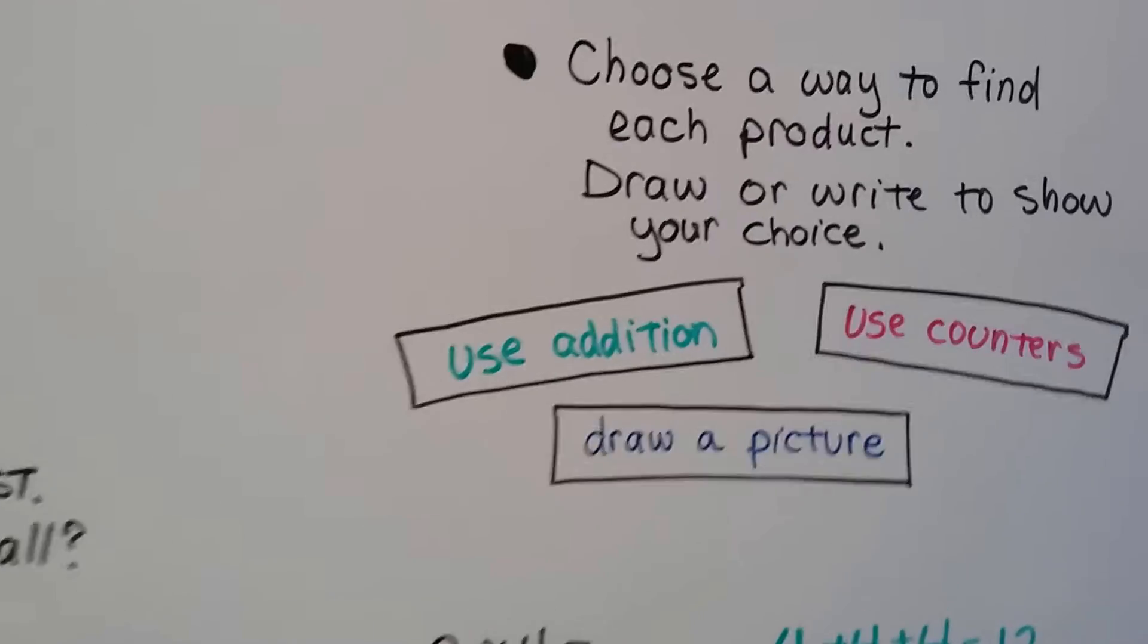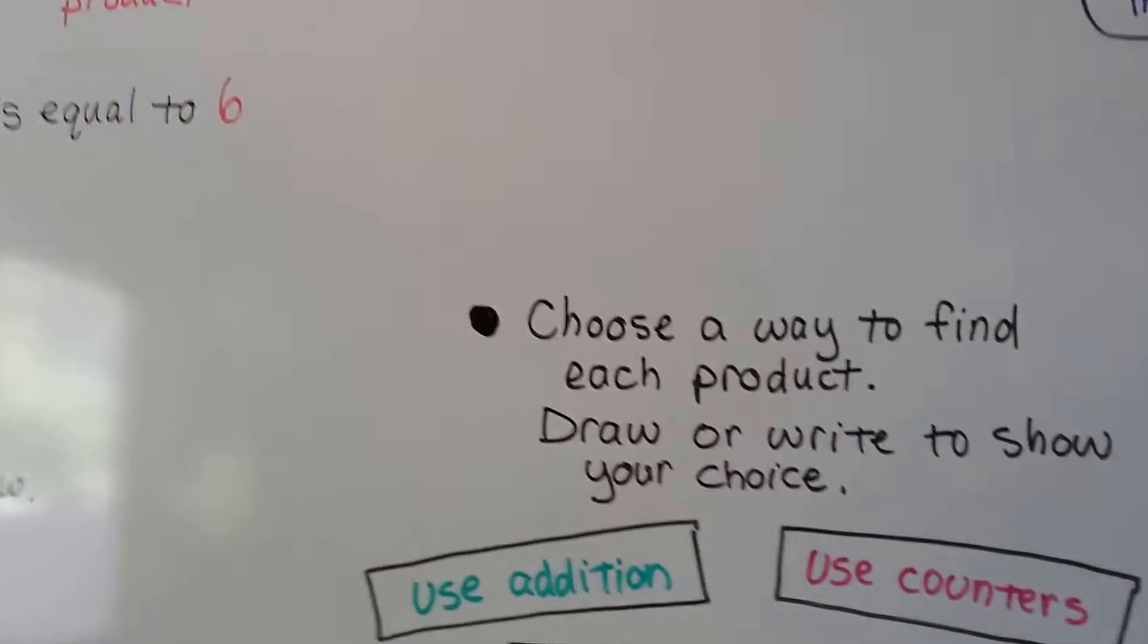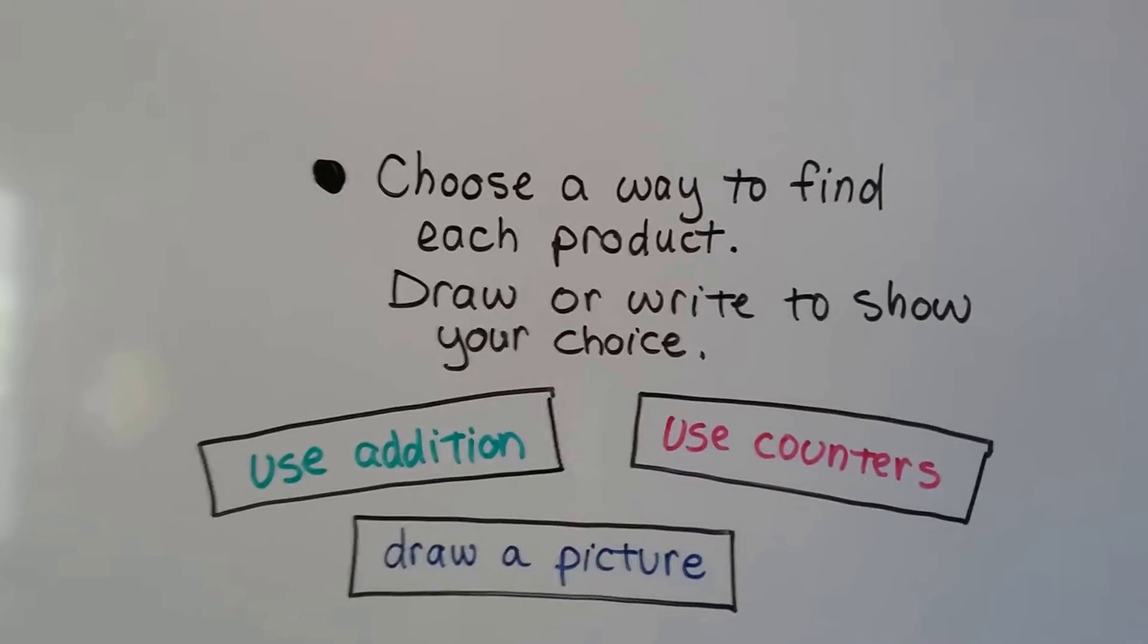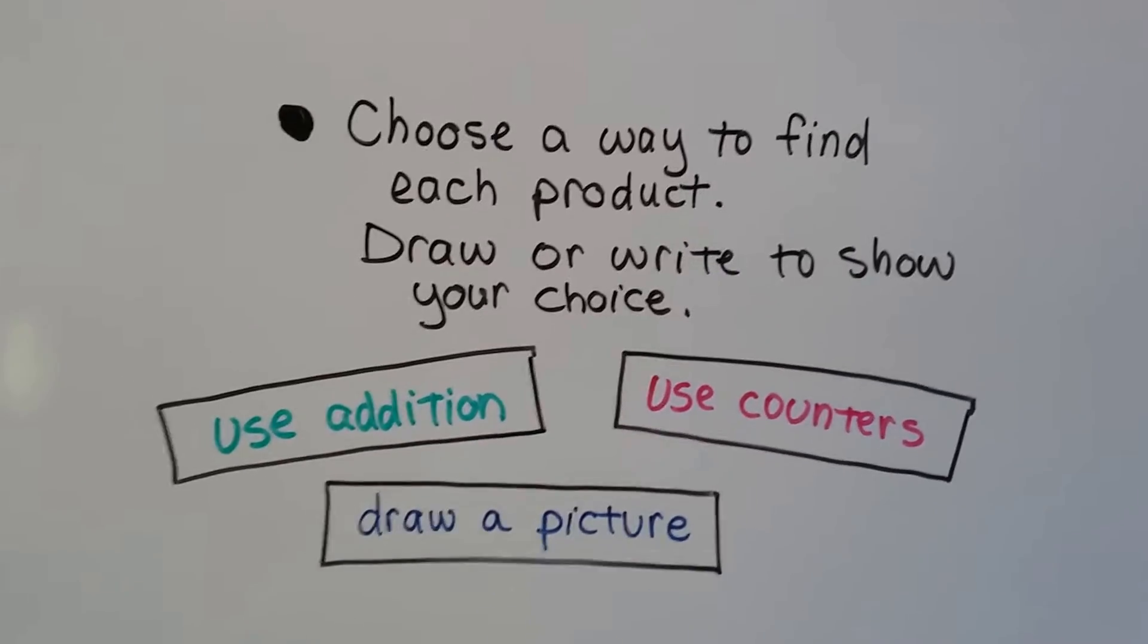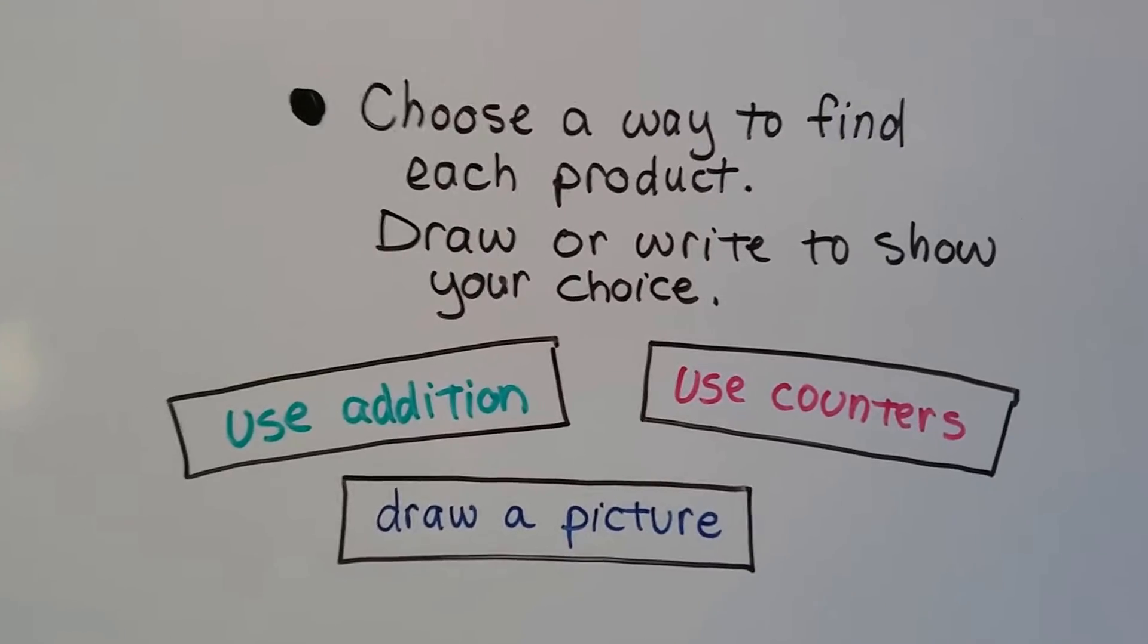So we can choose a way to find each product. Remember, product is the answer in multiplication. So we can choose a way to find each product, and we can draw or write to show our choice. We can use addition, we can use counters, we can draw a picture.